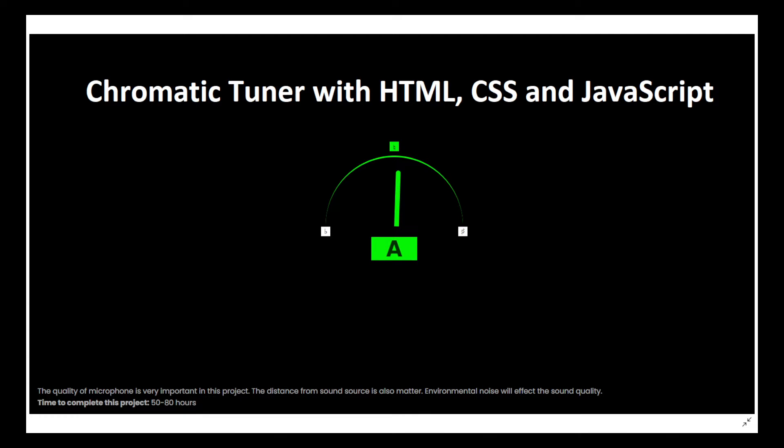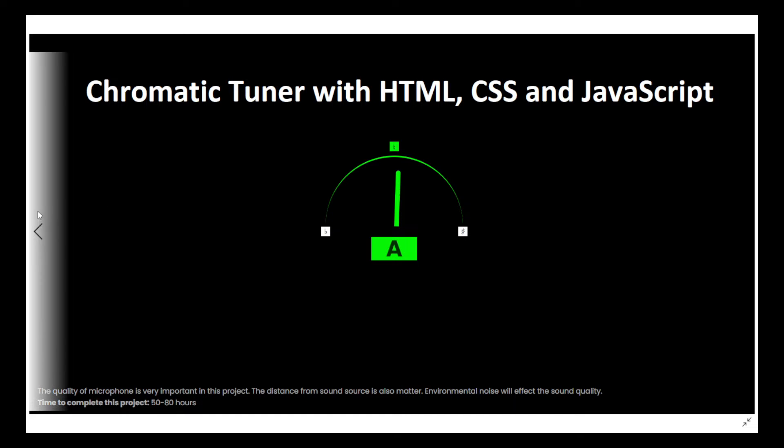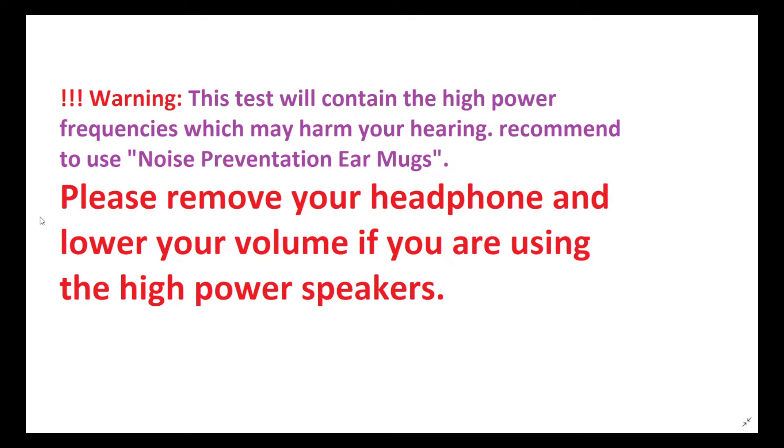This is a quick demonstration of what we will be doing next — we'll be creating the Chromatic Journal with HTML, CSS, and JavaScript only. We don't use any library, so that means it's library-independent. We will be creating everything from scratch.